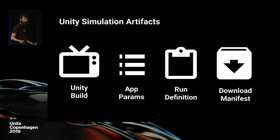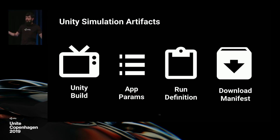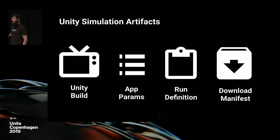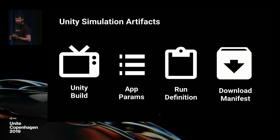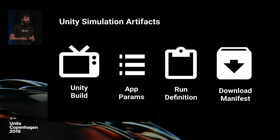The second artifact is the app params. As Kevin mentioned, Elogica ran multiple instances of their simulation and different instances needed different parameters, so app params is the object that controls how the simulation runs. The third artifact is the run definition, which binds everything together — it includes what simulation we want to run, what hardware to run it on, how many instances, and which app params to use. Finally, the download manifest has all the links to download the data you've generated, whether it's images, logs, or any other information.